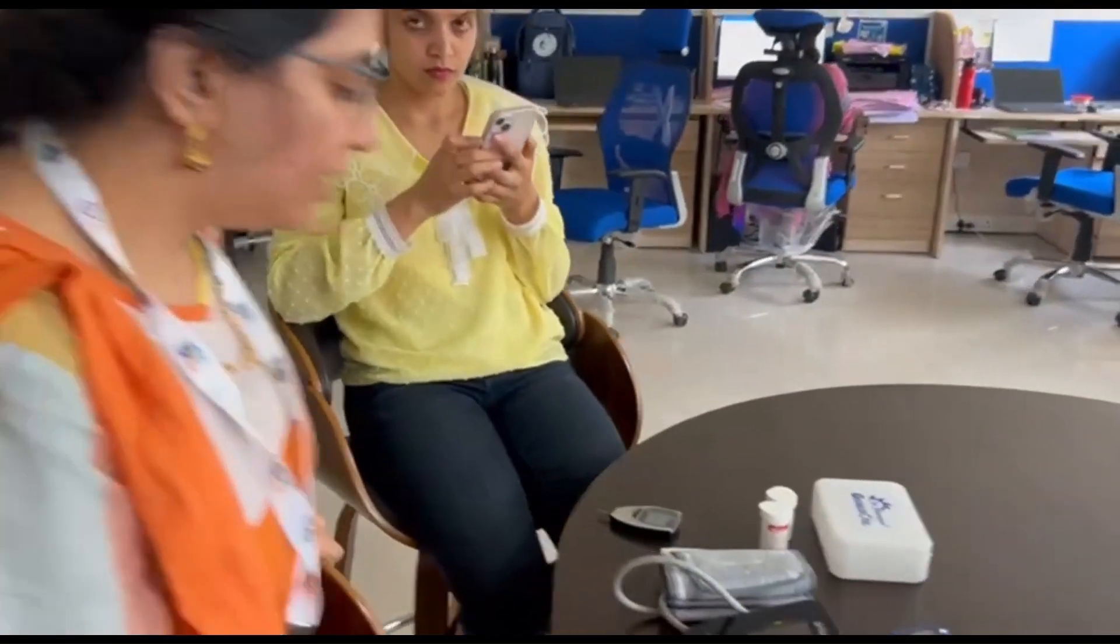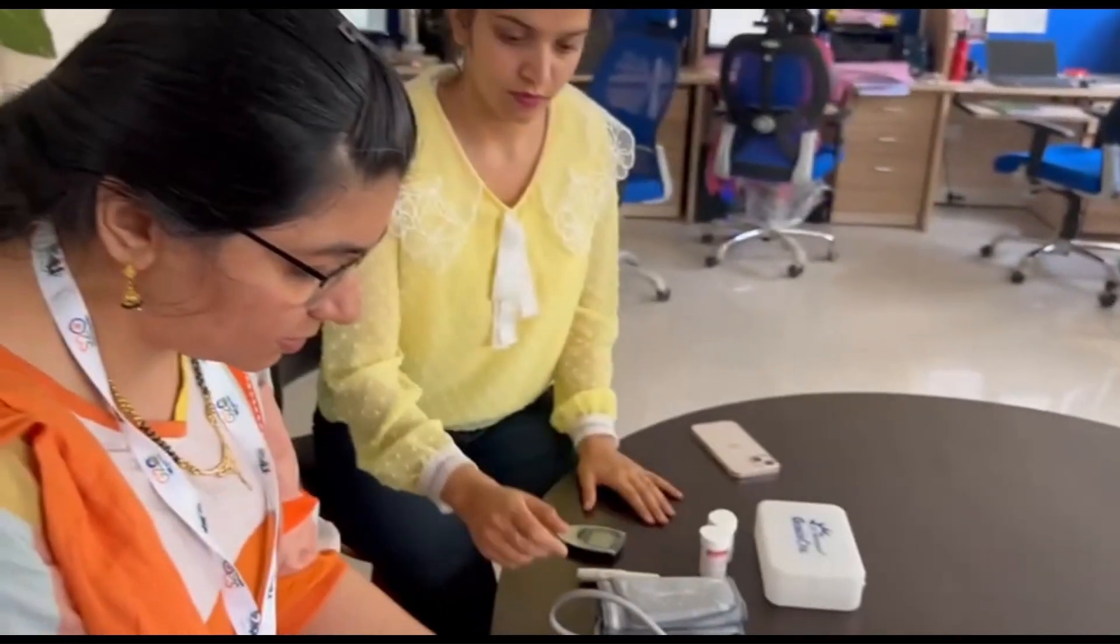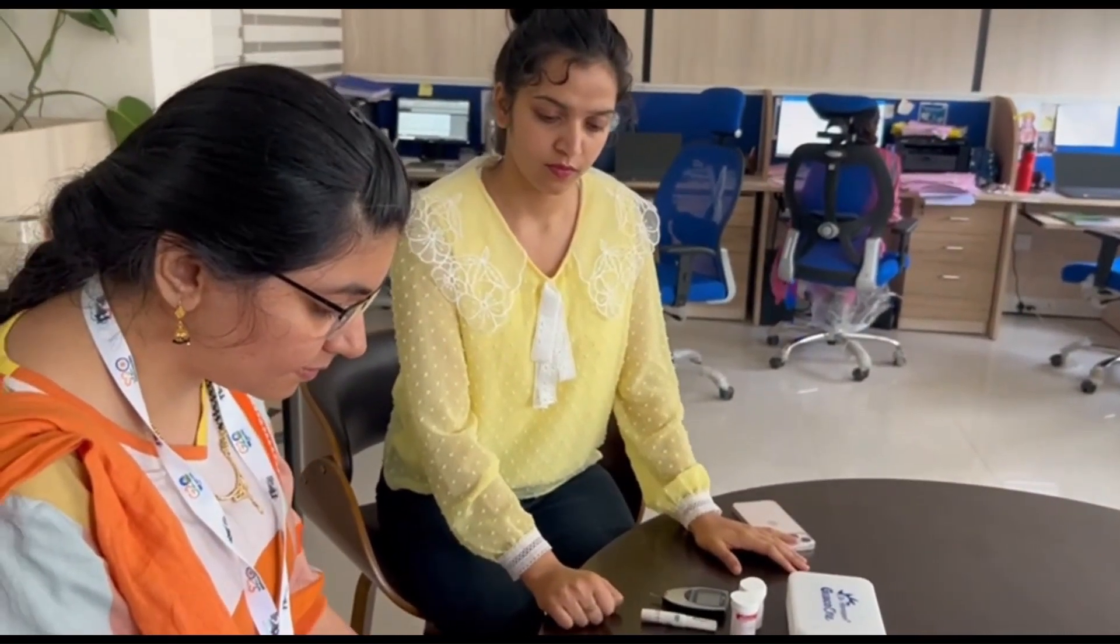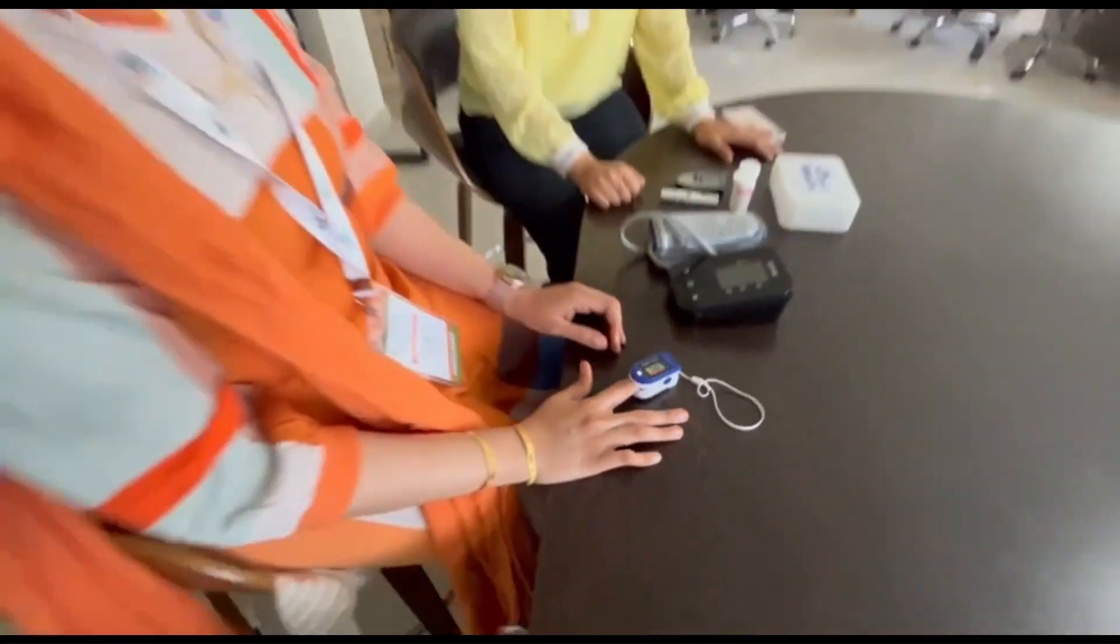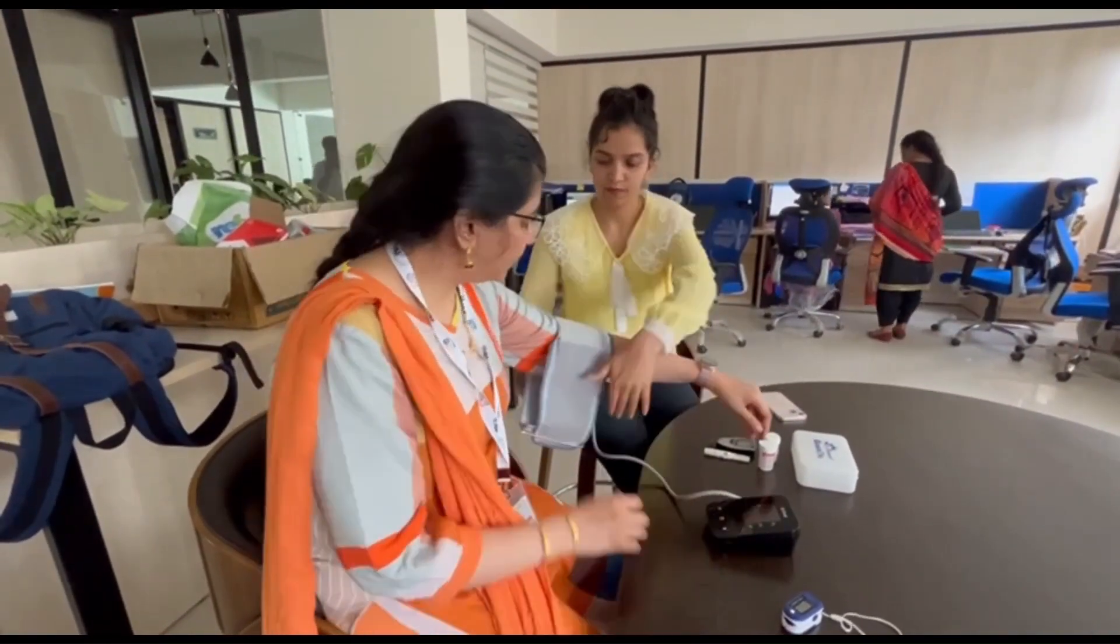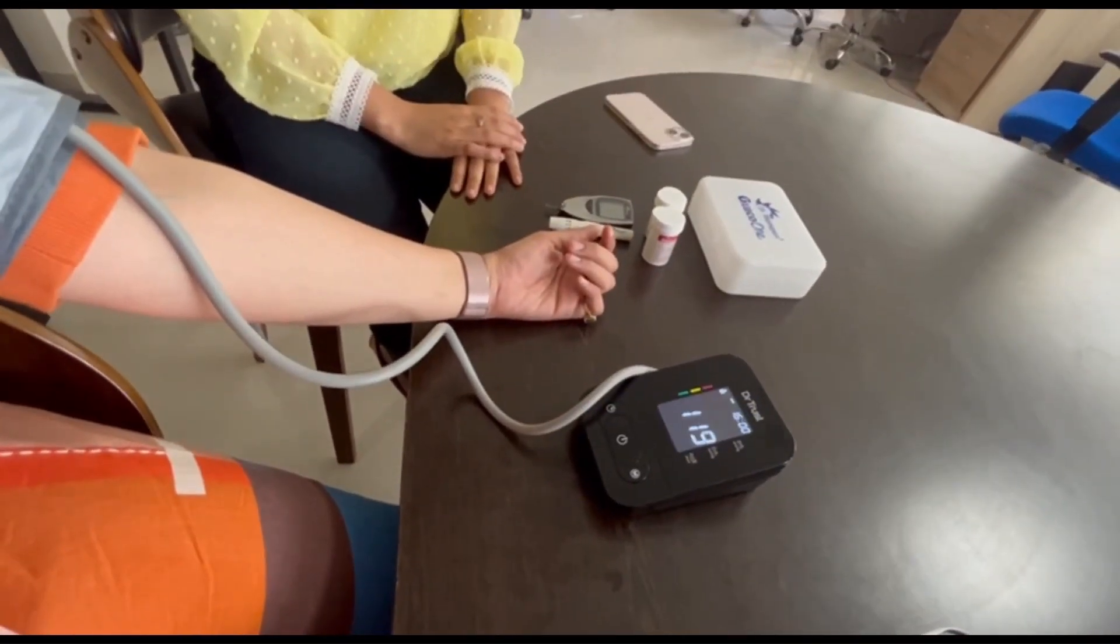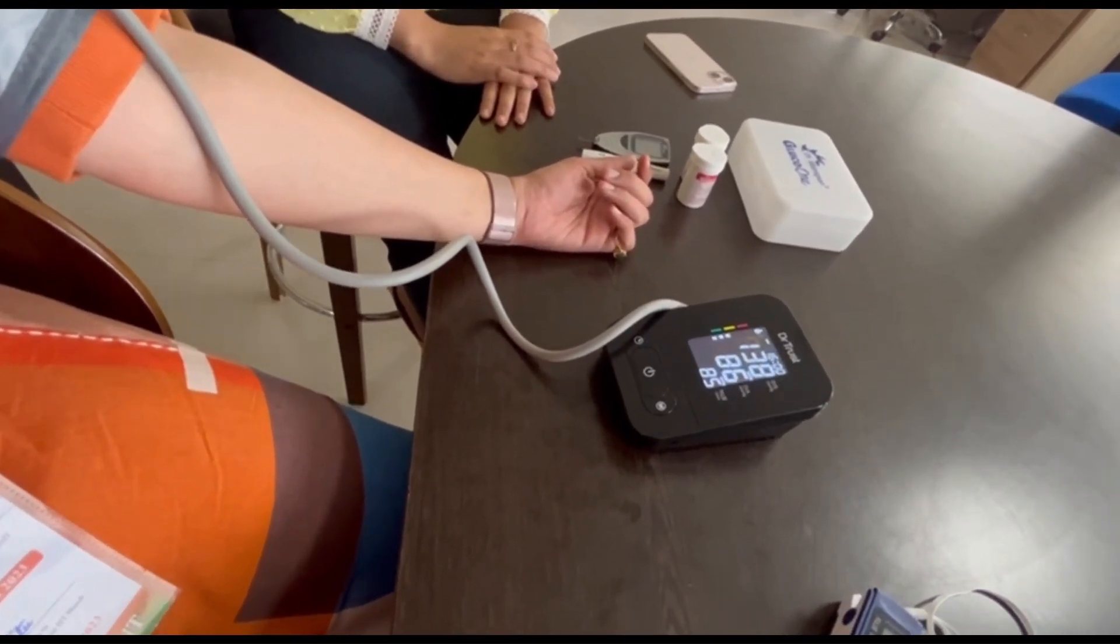We have obtained the sensor's response to the breath sample but we also need to capture the body vitals details. We'll be using the standard digital healthcare devices for measuring the body vitals such as SpO2, which is the oxygen supply in the blood, heart rate and blood pressure. The pulse oximeter shows the heart rate as 87 and SpO2 as 98. Next, we'll be checking the blood pressure and we have the blood pressure reading as 138 over 86.